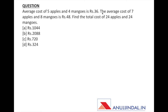The next question says: the average cost of 5 apples and 4 mangoes is 36 rupees, and the average cost of 7 apples and 8 mangoes is 48 rupees. We are given two average costs. The question asks us to find the total cost of 24 apples and 24 mangoes. Notice that we are given average costs, but we need to find total cost.